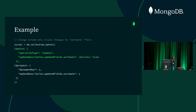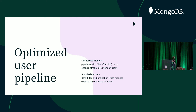Here's an example: using $match as a filter, we only care about events where the field 'estimate' was changed — so it's present in the update description. And with $project, we only care about that estimate field and don't include any other ten fields that changed. This way we first filter out a bunch of other changes, and with the projection we trim the size of the event to just the document key and the estimate value, making it very small.